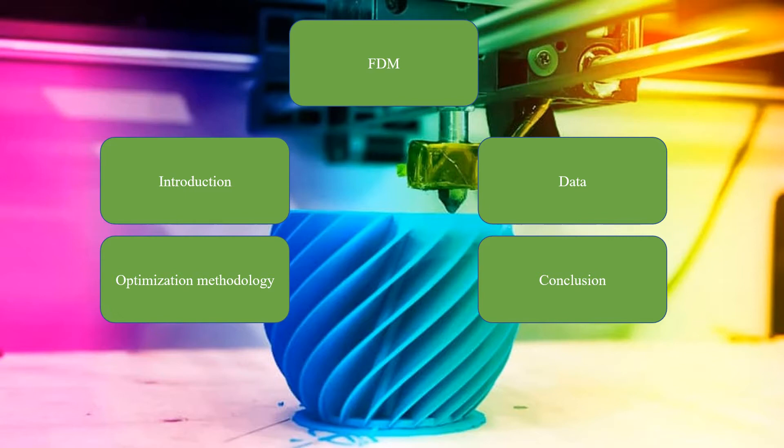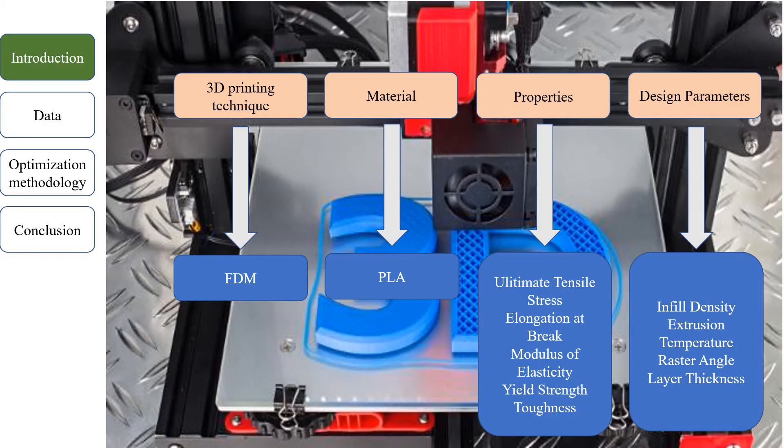Our presentation is divided into four main parts. First, our study was introduced, then data and employed optimization methodologies were described. Finally, novelties and gaps are mentioned in this work. The effect of process parameters on tensile characteristics of 3D printed objects was studied.